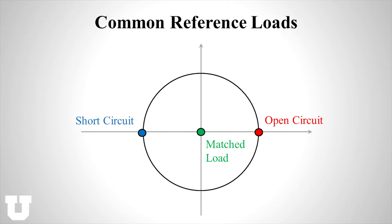Now consider some of the common reference loads: the short circuit, the matched load, and the open circuit. The open circuit reflection coefficient evaluates exactly to a real value of plus one, so that would be a dot on the far right end of the Smith chart. The short circuit would be a reflection coefficient of negative one, which would be on the left edge of the circle. And then there's the in-between case of a perfectly matched load, where there is no reflection, so gamma is zero, and it lands right there in the middle of the Smith chart.